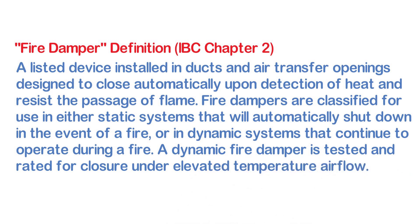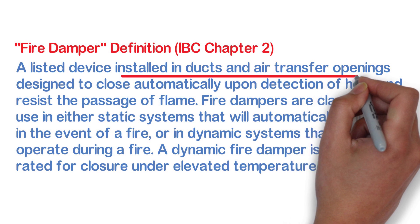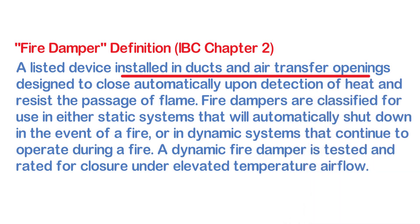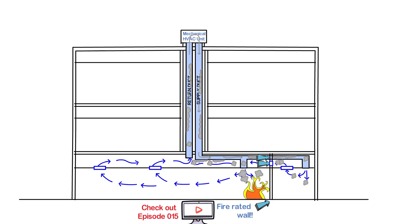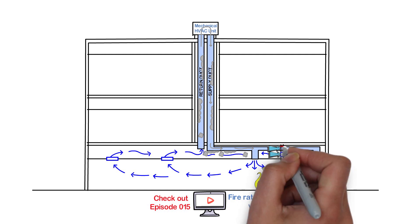So let's break this down. First, it says that a fire damper is a device that is installed in ducts and air transfer openings. So if we go back to our example, let's clean some of the things here to make this a little clearer. A damper as we read would go in our duct here and in our air transfer here.